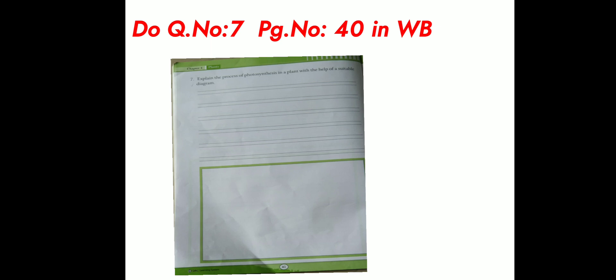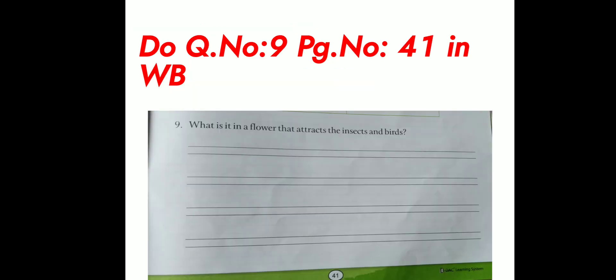Next question. Do question number seven on page number forty in workbook. The question is, explain the process of photosynthesis in a plant with the help of a suitable diagram. Next question, what is it in a flower that attracts the insects and birds?